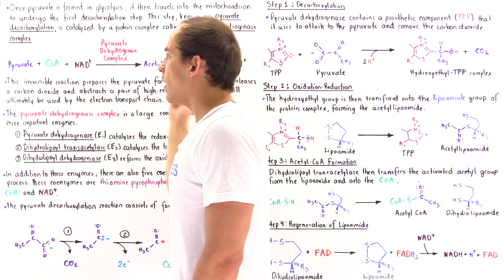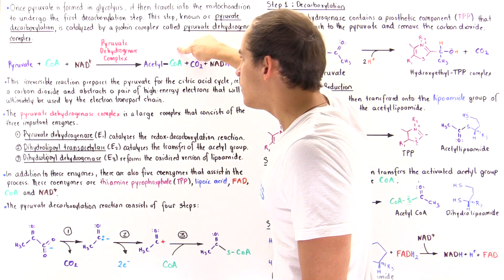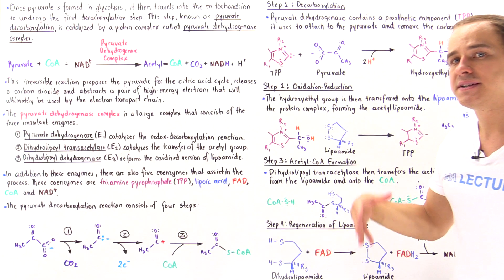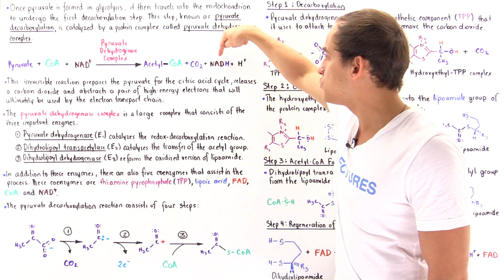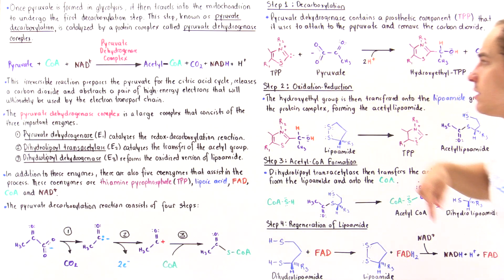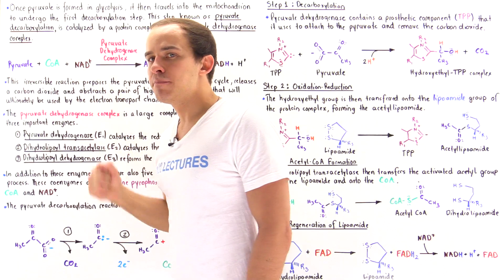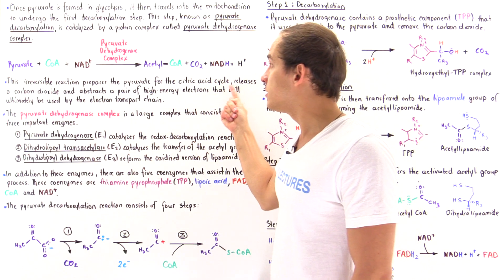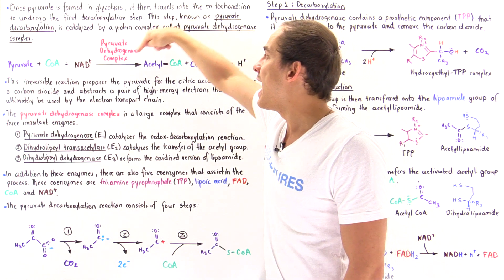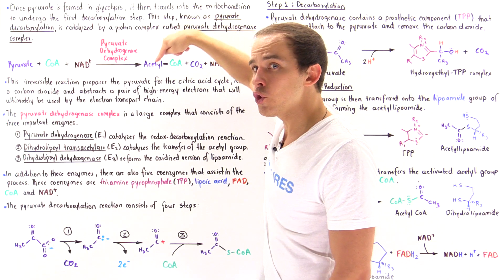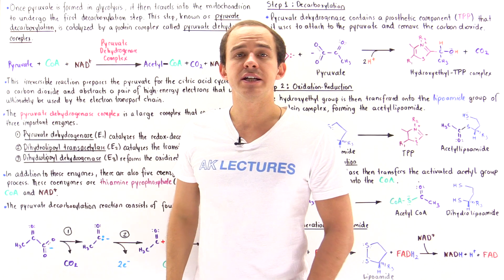Summing up all four reactions: this net equation, while seemingly simple, consists of four distinct steps. In the first three steps we form acetyl coenzyme A, and the final step regenerates the lipoamide coenzyme while generating NADH and an H+ ion. This process abstracts electrons and the acetyl group from pyruvate, attaches it to coenzyme A to activate it, and prepares it to enter the citric acid cycle.